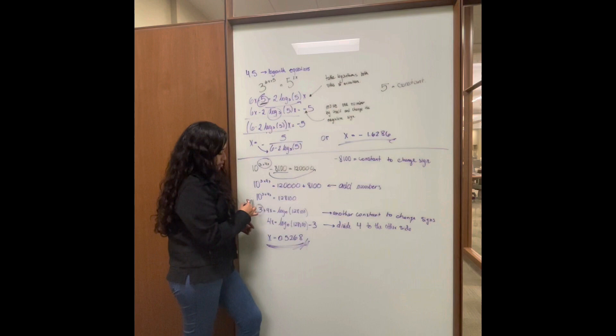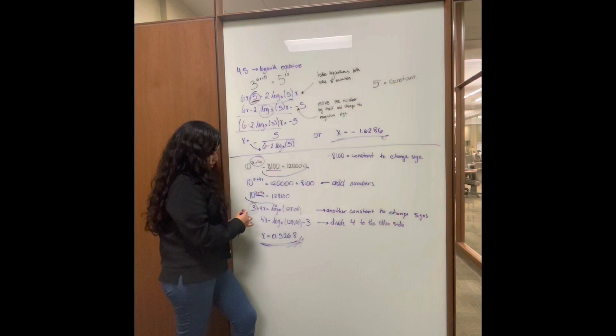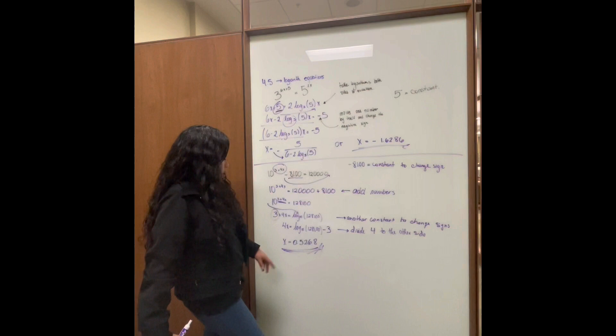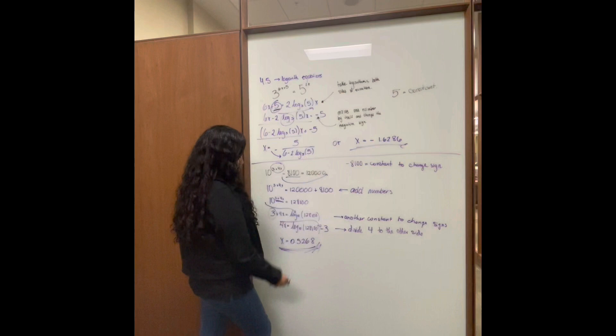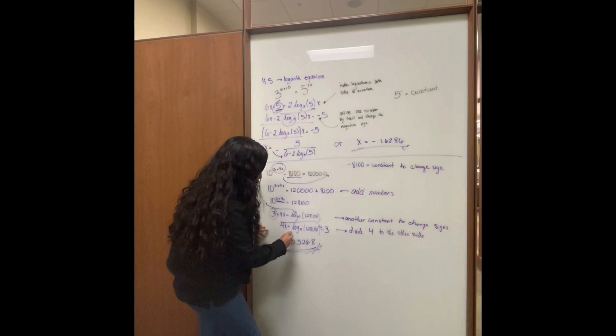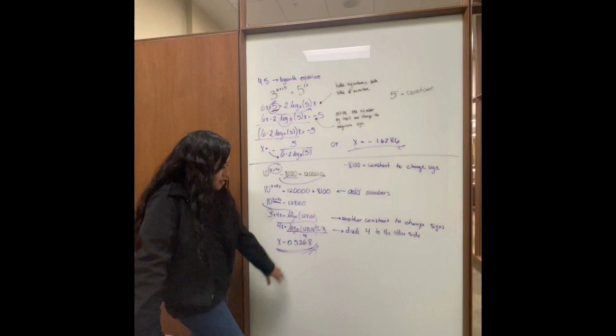We end up with our exponents in here. We're going to use another constant in this case, because remember we want one alone. So we choose the three, and the three goes to the other side as a negative. This one still has a four, so we're going to move it in here — it's going to look like that. Then we just put it in our calculator and that's going to be our answer.